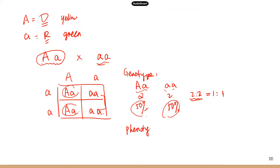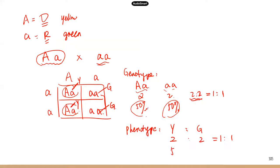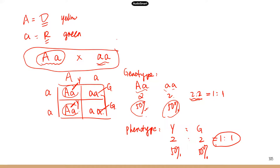For phenotypic ratio: big A, little a gives yellow seeds, and little a, little a gives green seeds. Yellow seeds appear in two squares and green seeds in two squares — converting two to two gives a phenotypic ratio of 1:1. Each has a 50% chance of being in the offspring. So for this cross with one heterozygous parent and one homozygous recessive parent, the phenotypic ratio is 1:1, meaning 50% yellow seeds and 50% green seeds.